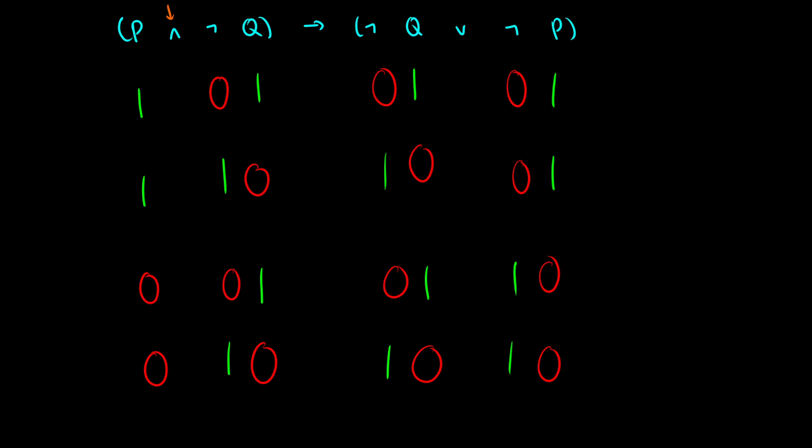So p and not q. This is going to take information from p, information from not q. Remember, the conjunction is true only when both of its conjuncts are true. So in the first row, 1 and 0 gives us 0. In the second row, 1 and 1 will give us 1. Third row, 0, 0 gives us 0. And then the fourth row, 0, 1 gives us 0. So that's the line for the conjunction here, 0, 1, 0, 0.